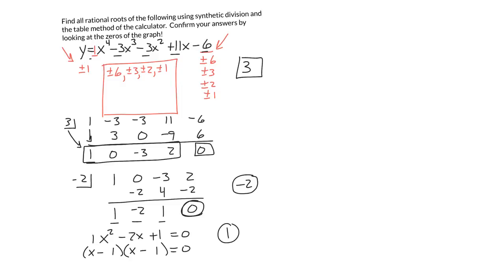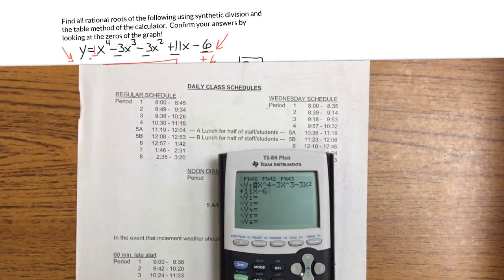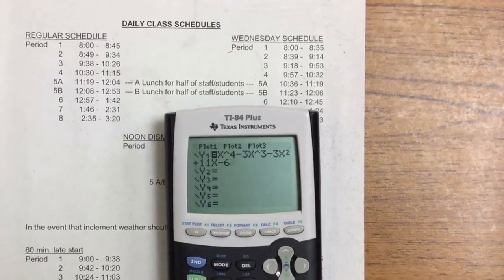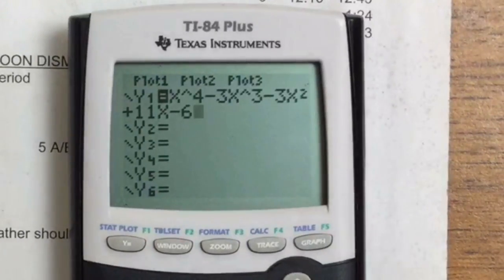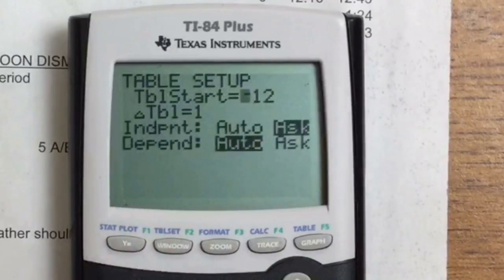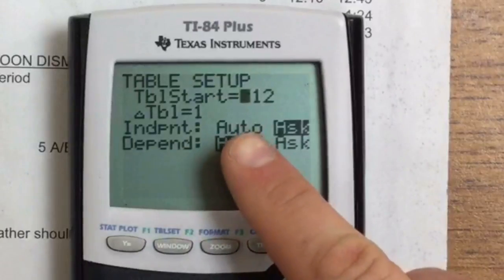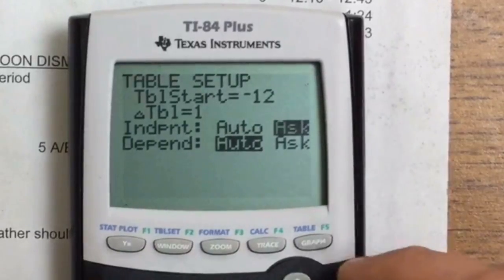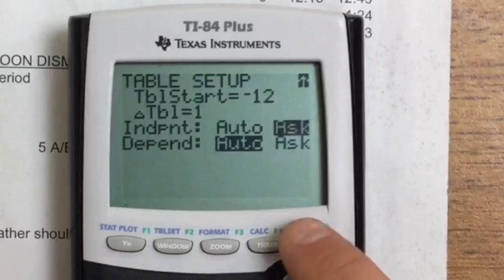Now you can confirm that by graphing and looking at the zeros and seeing if they are indeed 1, negative 2, and 3. There's a really super easy way to find the zeros using a thing called the table of your calculator. We have never done this before, so we'll show you how to set that up. The first thing you notice I did is I typed in the equation into y equals, and then I went to 2nd table set, which is 2nd window, and what I want to do here is I want to have this independent variable set to ask, not auto. So if yours is set to auto, make sure you push enter on ask, and then go to 2nd graph, which will actually take us to table.